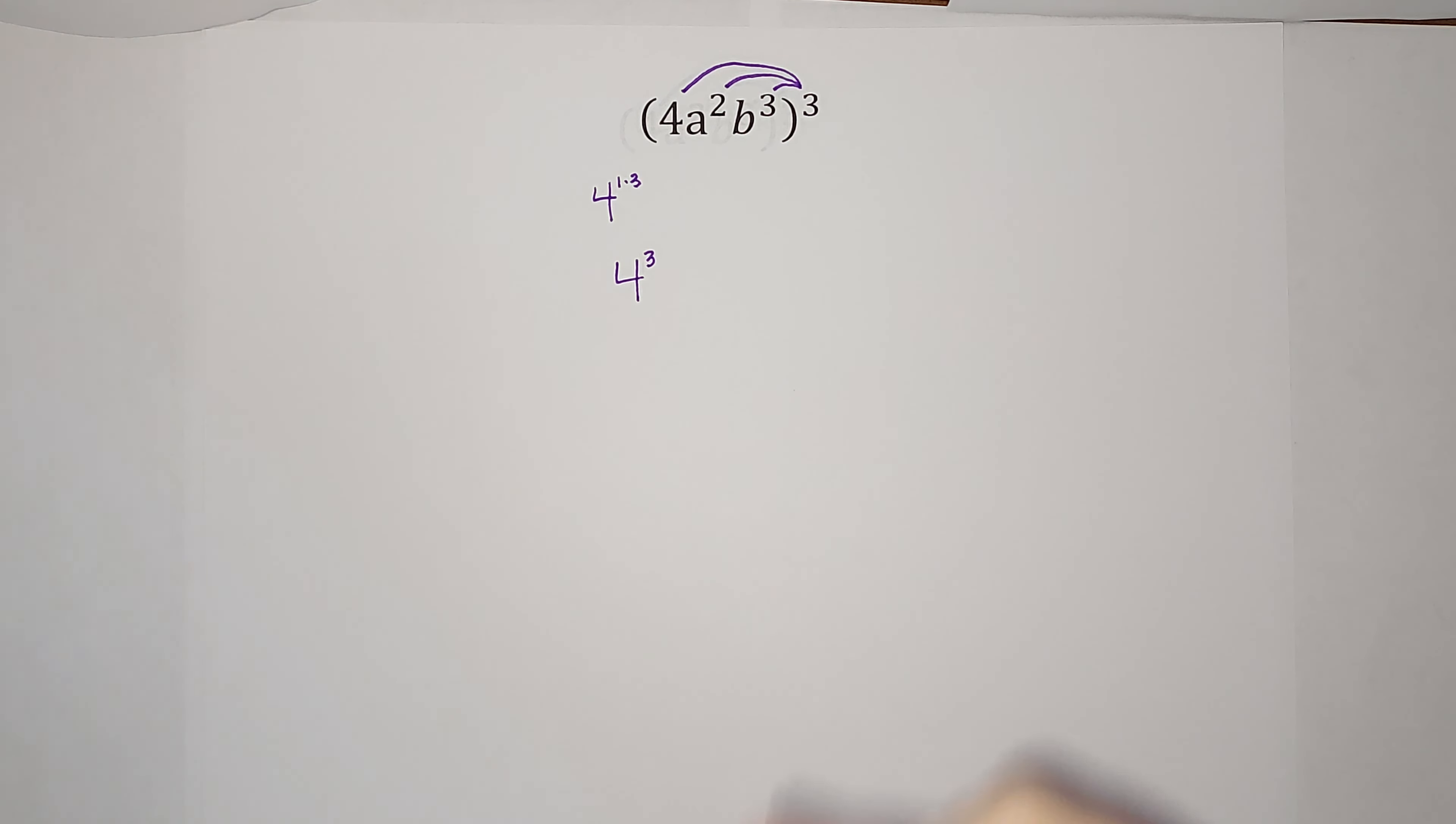I'm almost done here, but it is nice to be able to multiply that out. This is not four times three; it is four times itself three times. So four times four times four. Four times four gives me 16.